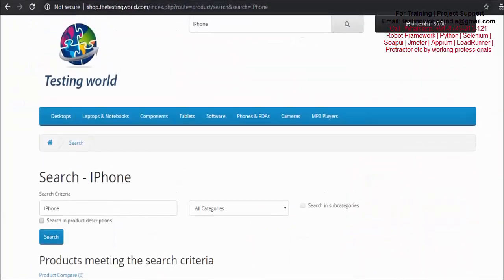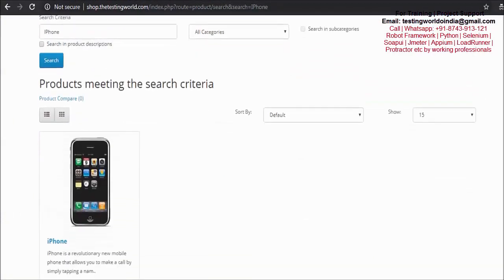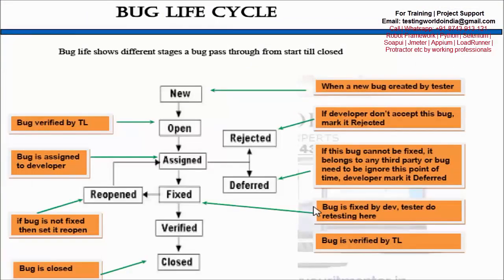Second option: as a developer, I try to replicate the bug and yes, I find it seems to be a bug — we should get at least three iPhones. I agree it's a bug, but as of now I'm working on some other important task, so I cannot work on this. In that case, I'll mark it 'deferred'. Deferred means I accept it's a bug but I'm deferring it for later. The reason could be it belongs to a third-party tool, or the bug will automatically fix when new functionality is developed.